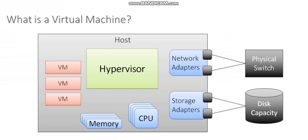And the hypervisor acts as the intermediary. It interposes itself between the virtual machines and the hardware — this is the magic sauce that makes virtualization work. Now all of my VMs can share a common set of physical hardware. I can have a bunch of virtual machines, each with their own independent operating system, sharing a common set of memory, CPU, common physical network interface cards, and storage adapters as well. And so as my first virtual machine goes to access hardware, it's utilizing the memory of the host, the CPU of the host, and all of the physical resources of the host.